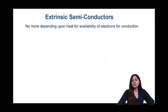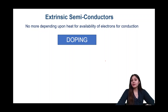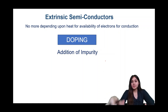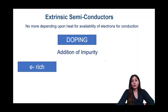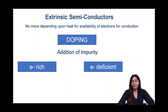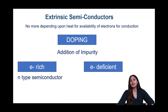What if we do not want to depend upon temperature? The conduction we get from heating is not quite practical — it's not enough to use for any purpose. So, semiconductors that allow us to move beyond heating for better conduction are called extrinsic semiconductors. What we do is purposely add some impurity — this process is called doping. The impurity we add is an element that can be either electron rich or electron deficient, and depending on that, we get n-type and p-type semiconductors.